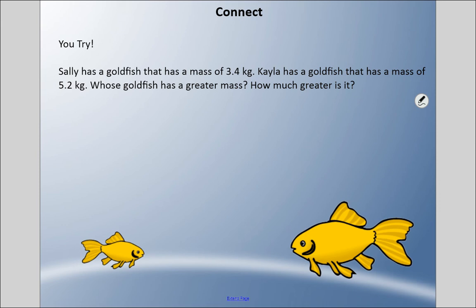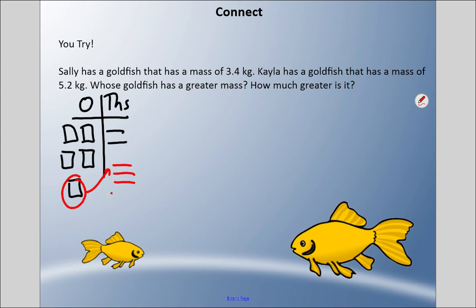With base ten blocks, we had 5 ones and 2 tenths. We're taking away 3.4. I don't have 4 tenths, so I'm going to trade this guy for one, two, three, four, five, six, seven, eight, nine, ten more. Now I can take away 3.4. Those three go away and four tenths. I'm left with 1 in the ones column and one, two, three, four, five, six, seven, eight in the tenths. So it is 1.8 kilograms greater.